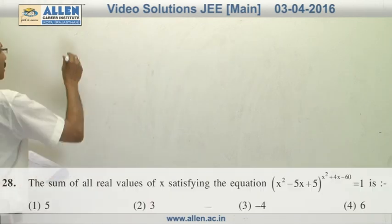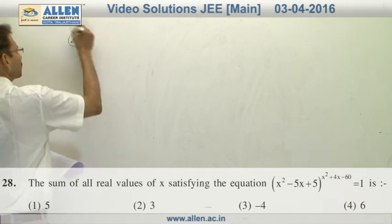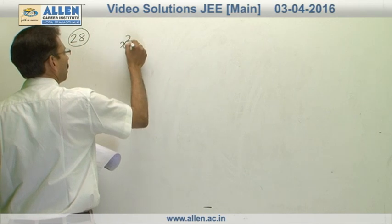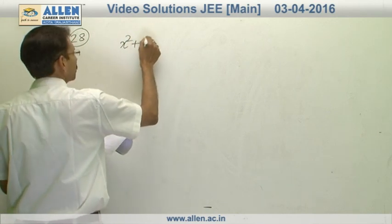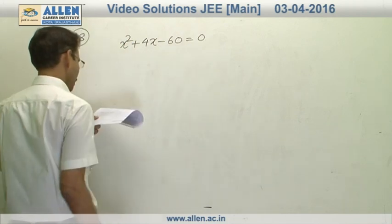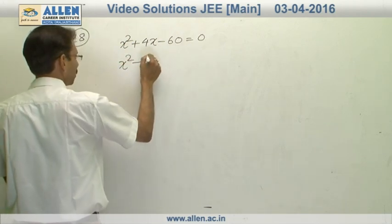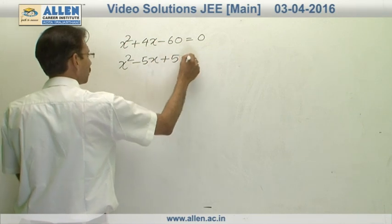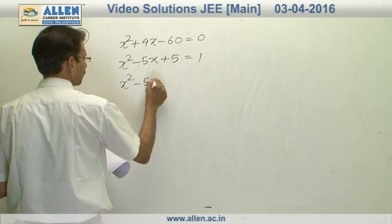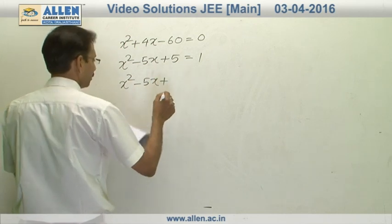In question number 28, the expression will be 1 under 3 situations. If power is 0, second case is the base is 1. Our third case is, base is minus 1 and power is an even integer.